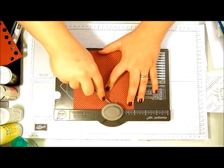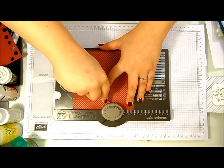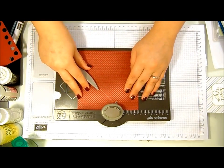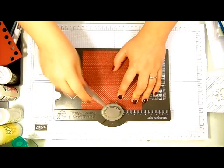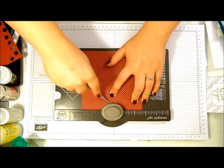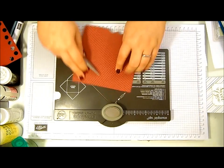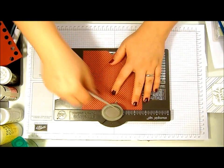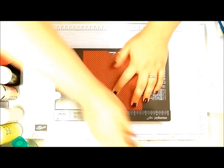So punch and score and slide it up to the next score line and punch and score. Turn it around again and we just do that on all four sides.